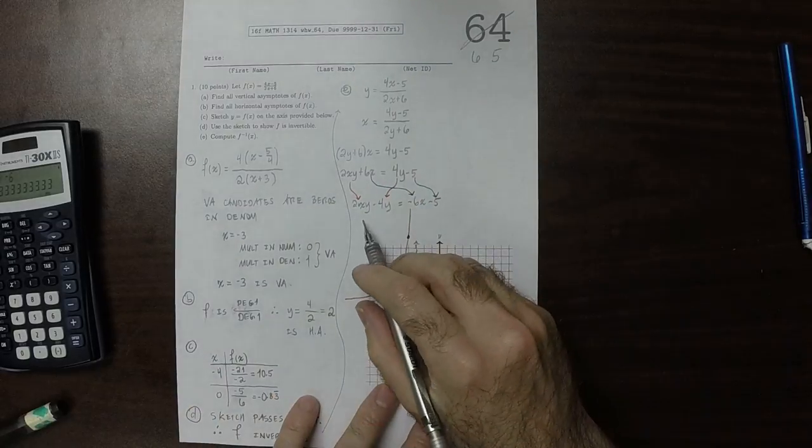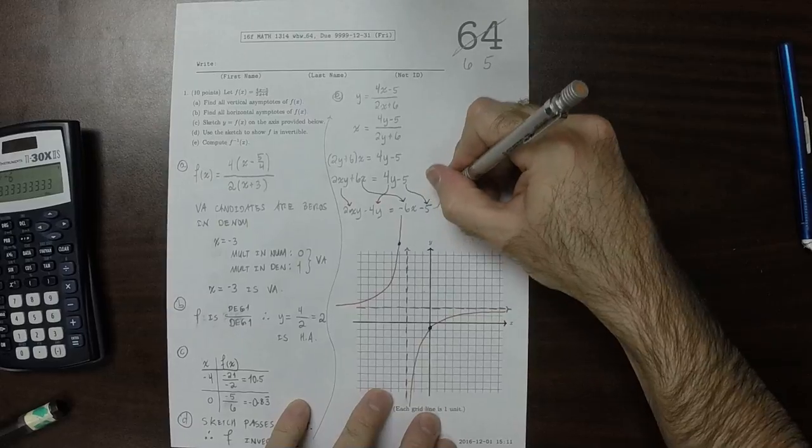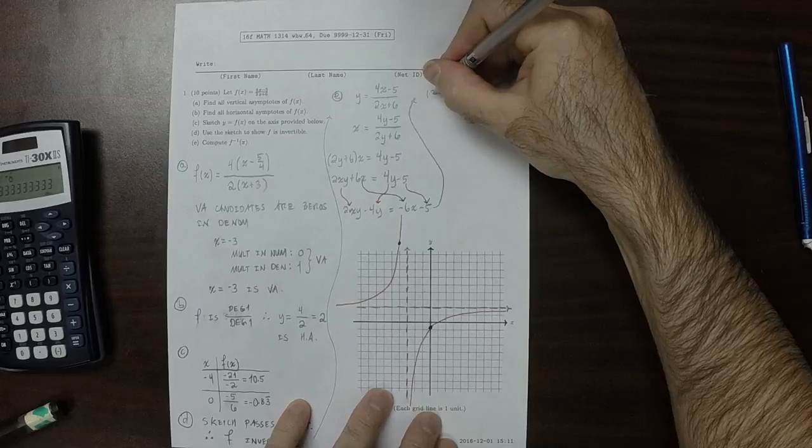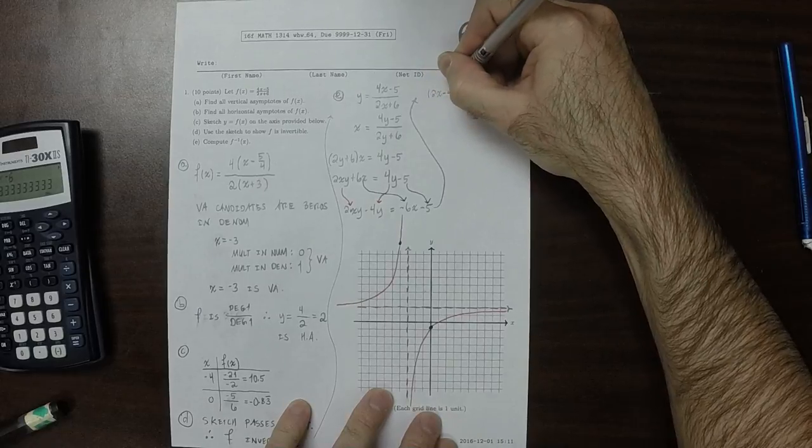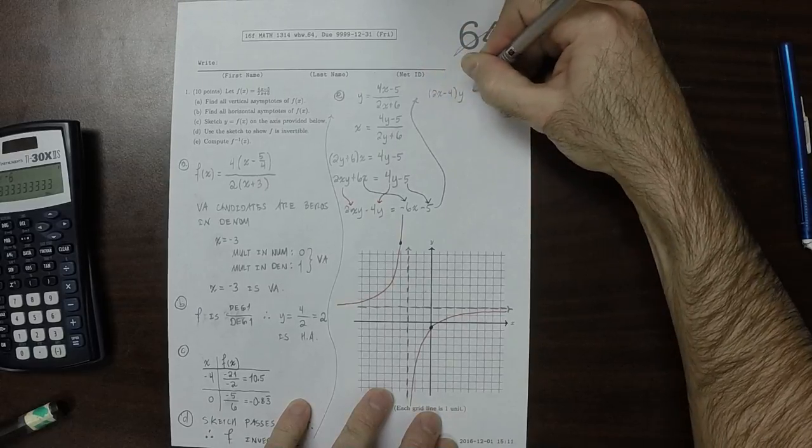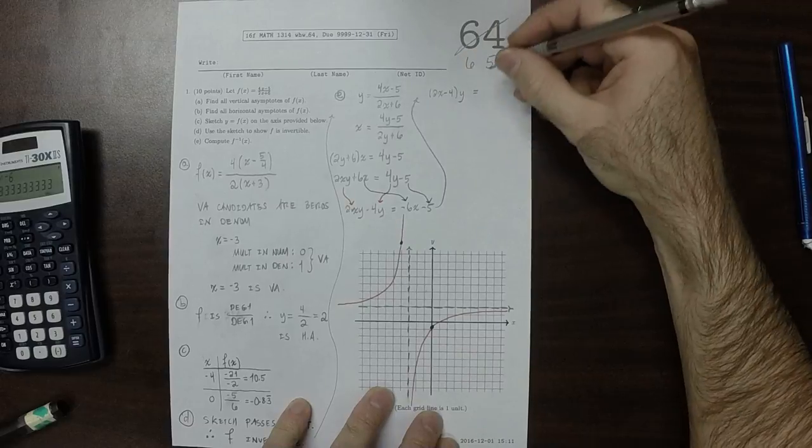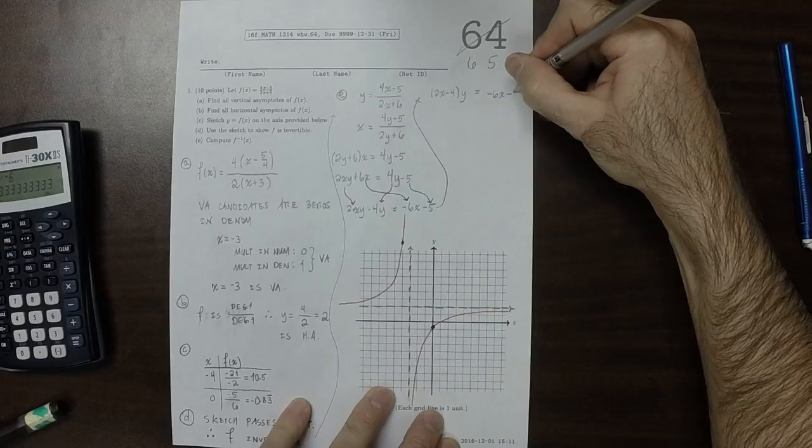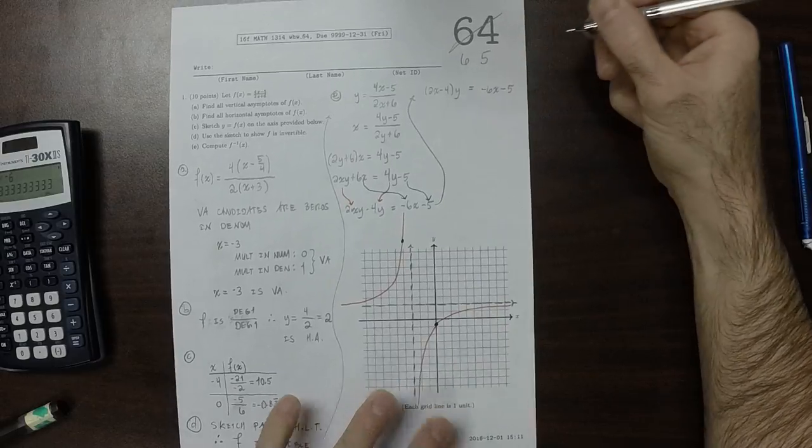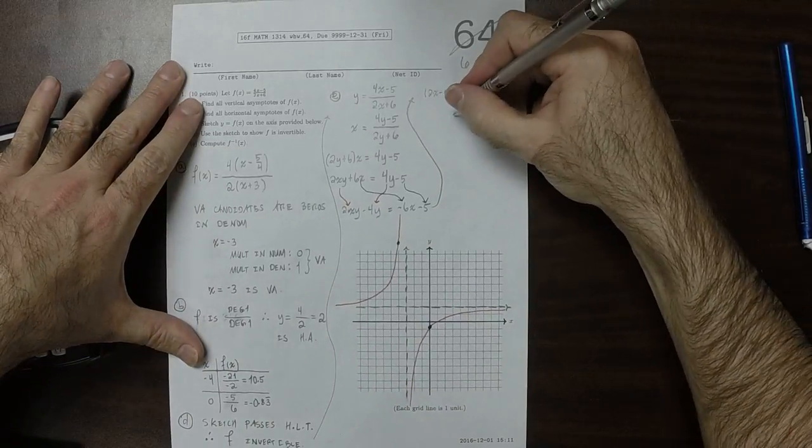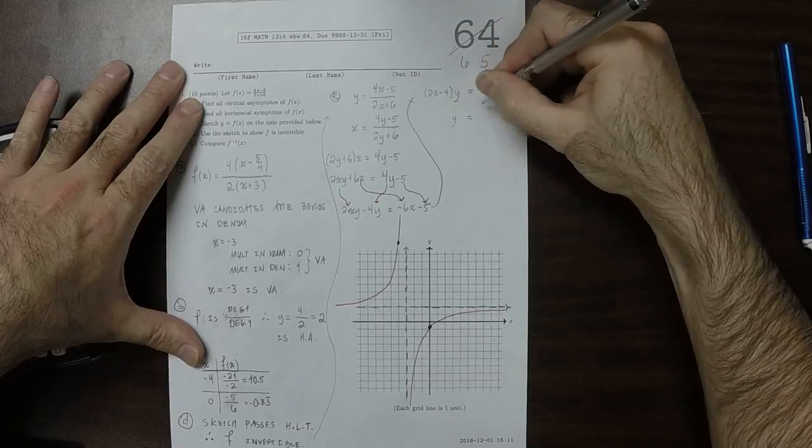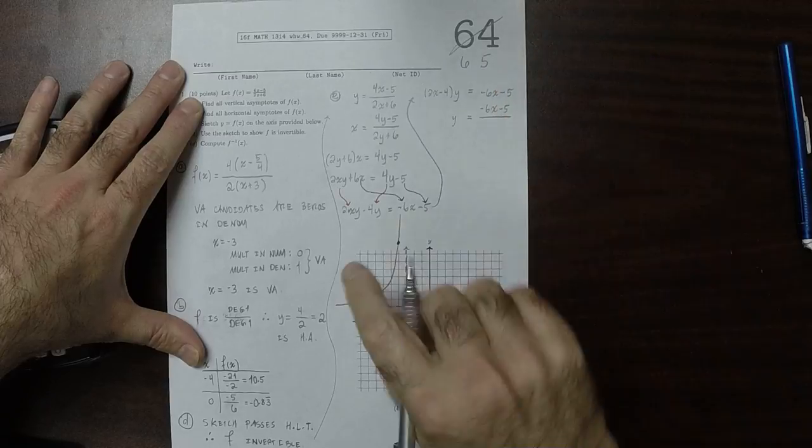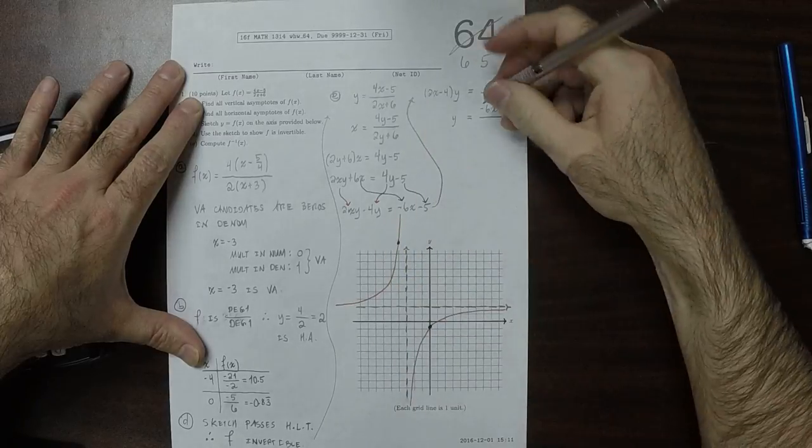And so now on the left-hand side there's a common factor of y, and I'll factor it out on the right to get 2x minus 4 multiplied by y is negative 6x minus 5. So y is negative 6x minus 5 divided by 2x minus 4.